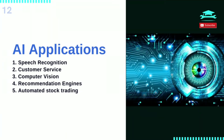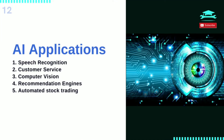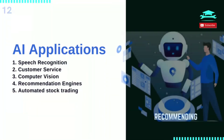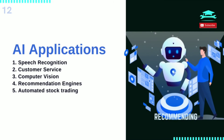Computer vision enables computers and systems to derive meaningful information from digital images, videos, and other visual inputs, and based on those inputs it can take action. This ability to provide recommendations distinguishes it from image recognition tasks. Powered by convolutional neural networks, computer vision has applications within photo tagging in social media, radiology imaging in healthcare, and self-driving cars within the automotive industry. Using past consumption behavior data, AI algorithms can help discover data trends that can be used to develop more effective cross-selling strategies and make relevant add-on recommendations to customers during the checkout process for online retailers.